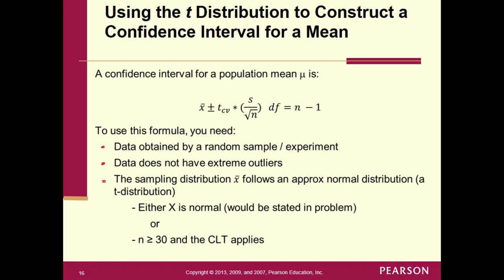And three, one of the big things is that, basically, we need the sampling distribution of x̄ to follow an approximately normal distribution. In other words, we need it to follow a t-distribution. Remember from chapter 7, we had a couple of criteria that allowed the sampling distribution of x̄ to be approximately normal. Either x had to be normal, or n had to be greater than or equal to 30. It's got to be one or the other. It can be both, but it's got to be one or the other. So you'll kind of see that in the problem that we're going to be doing here.